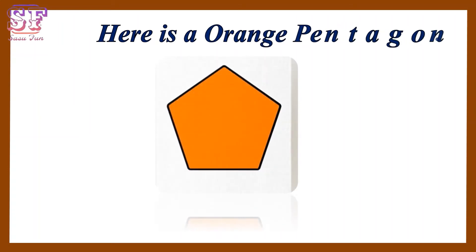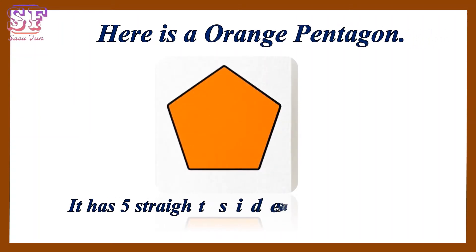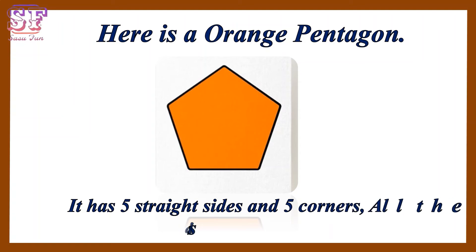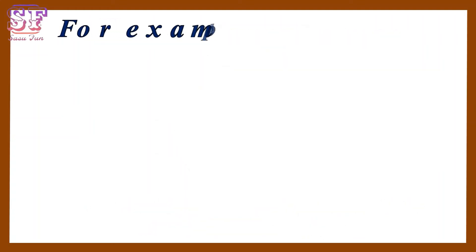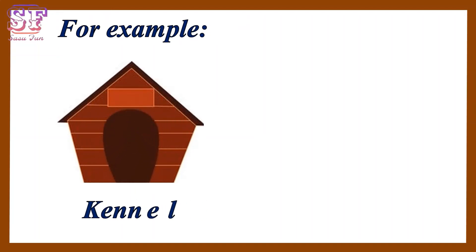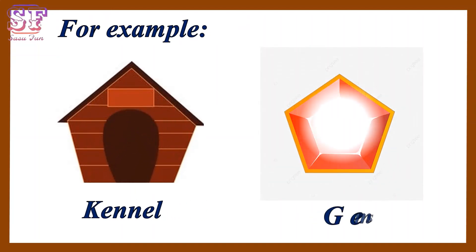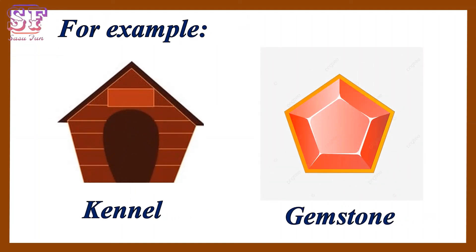Here is an orange pentagon. It has five straight sides and five corners. All the sides are the same length. For example, canal and cobblestone.